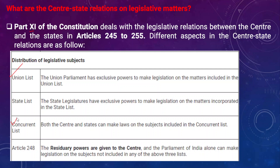Unlike in the US, where residuary powers are vested with the respective states, in India various committees have recommended that residuary powers should be given to states rather than the center. Because India has a unique model of federalism where powers tend towards the center, residuary powers remain with the central government. Parliament of India alone can make legislation on subjects not included in any of the three lists, as mentioned under Article 248.